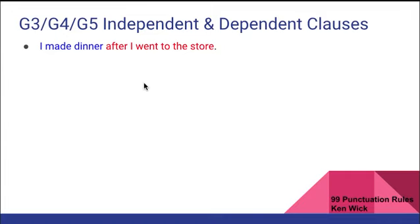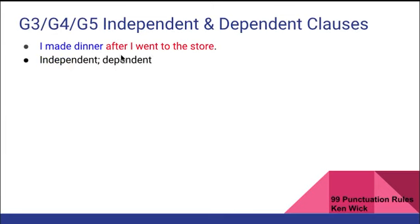I do so many of these examples just so you really understand this, because this is pretty crucial. Here we have a sentence with two clauses. 'I made dinner' — subject and verb, does not begin with a subordinating conjunction, therefore it is an independent clause. 'After I went to the store' — subject and verb, does begin with a subordinating conjunction, therefore it is a dependent clause. So: independent, dependent.